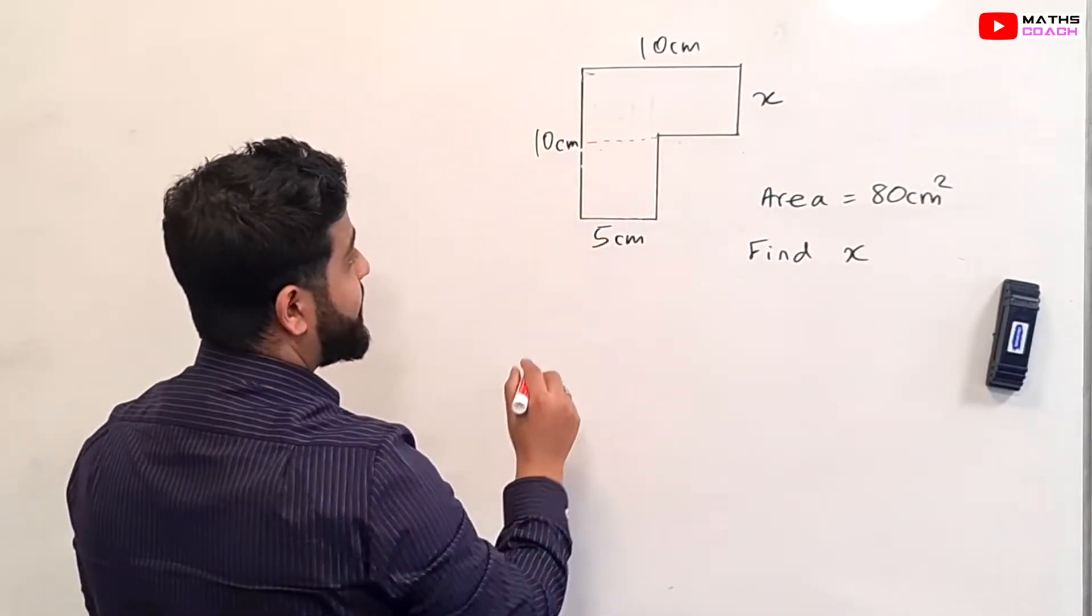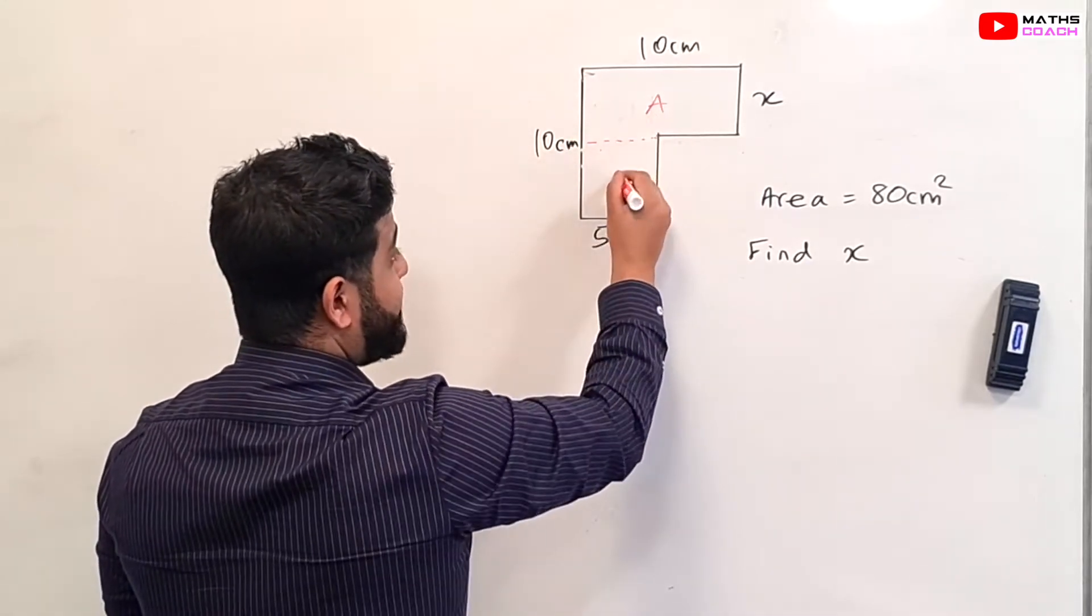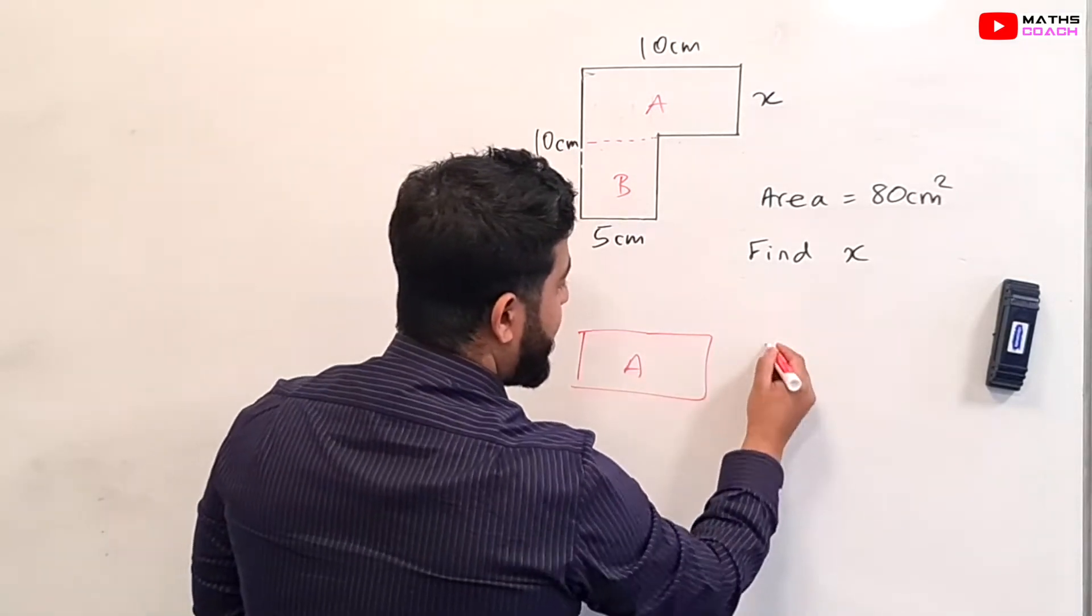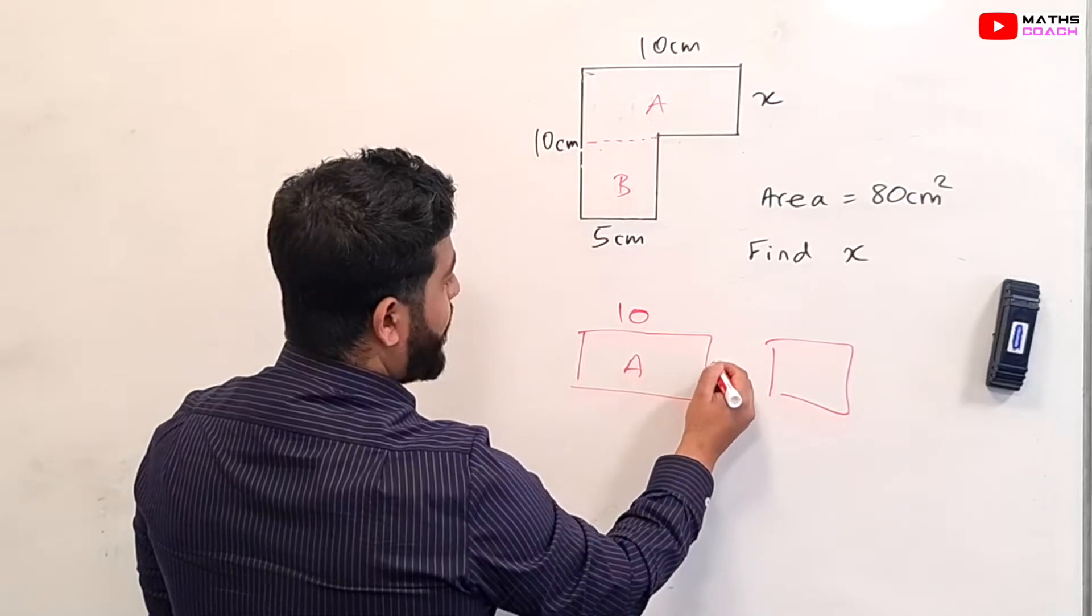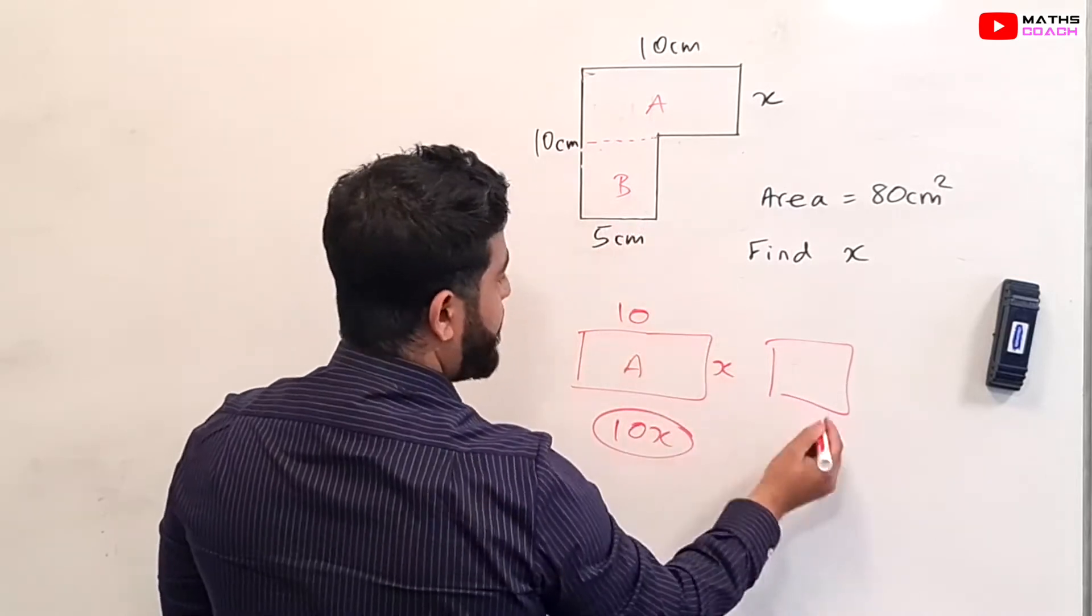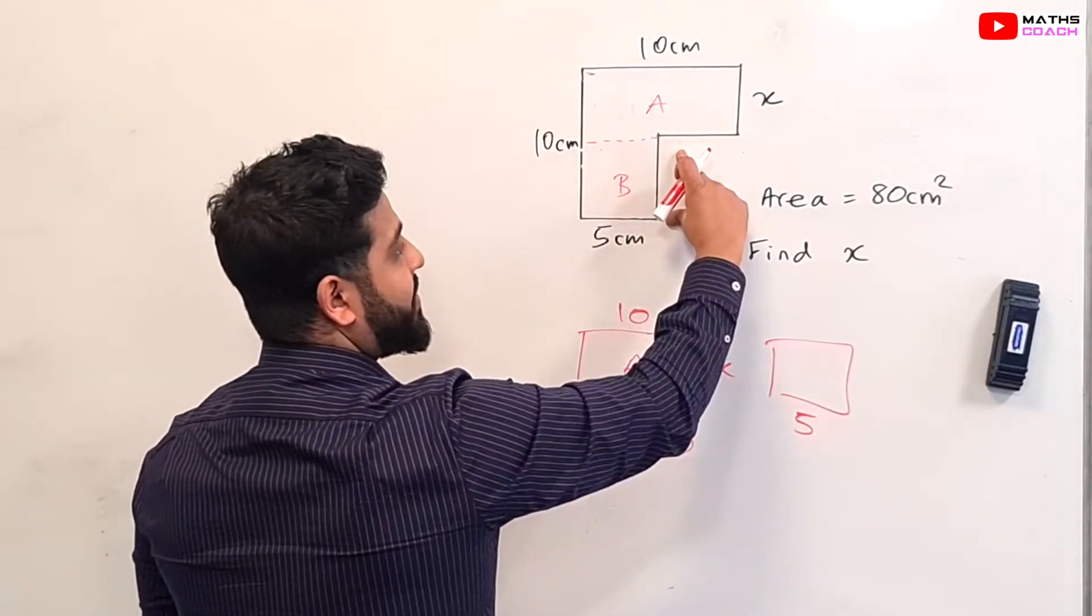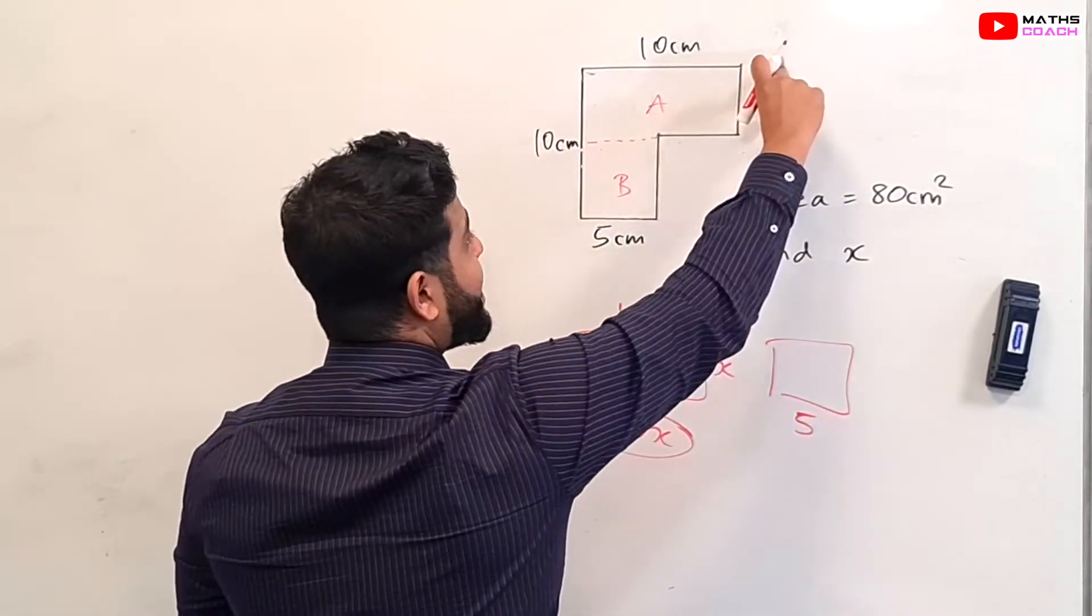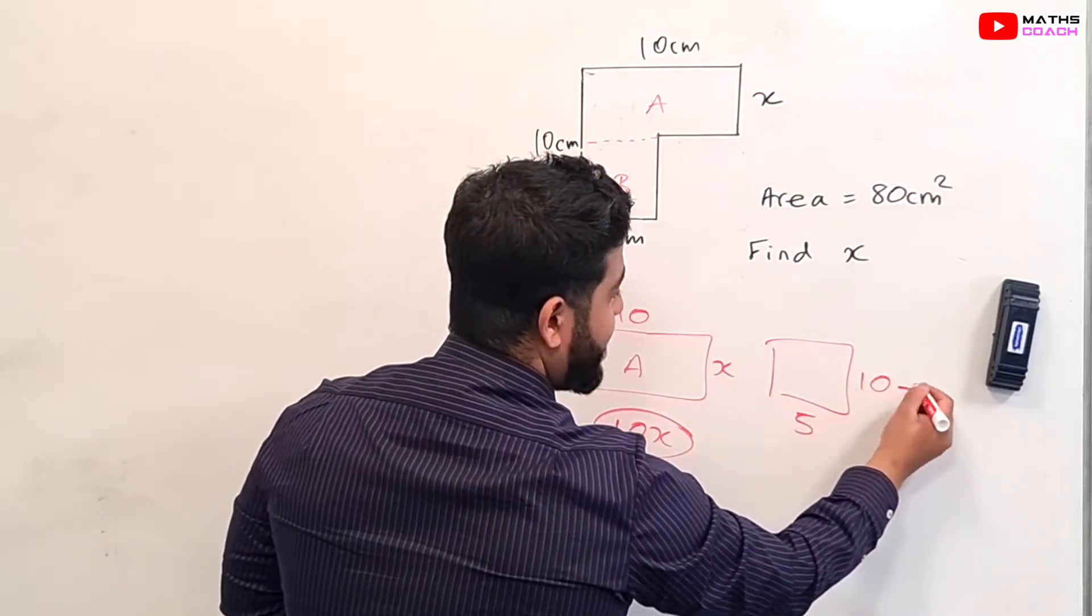Now the issue becomes this: if you break it up in this way, like I have here with A and B, we have this situation where this is A and this is B and then we have 10 centimeters there and we have an X there. So that's going to be 10X to find this area, no problem. And this one would be 5 and we don't have a length for just this. We don't have a length for just that because we know that this is 10. If we take away 10 minus the X, we have to have something like this: 10 minus X.